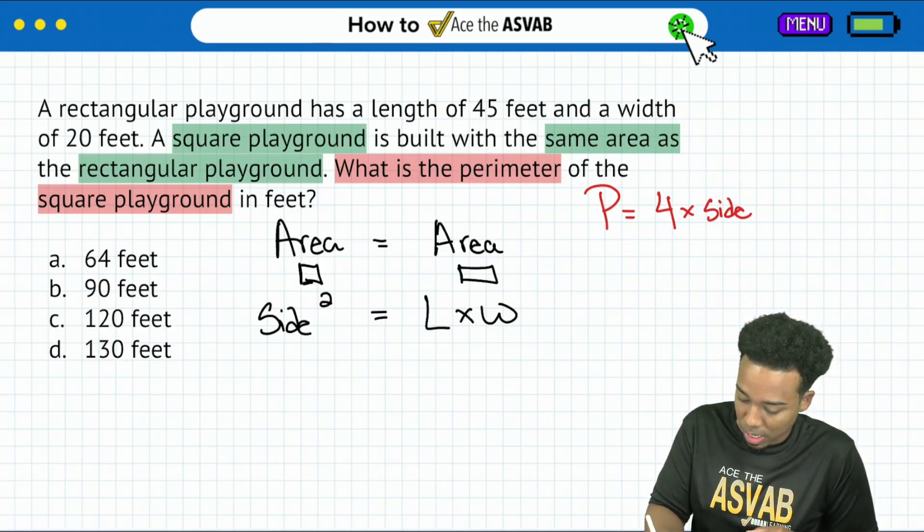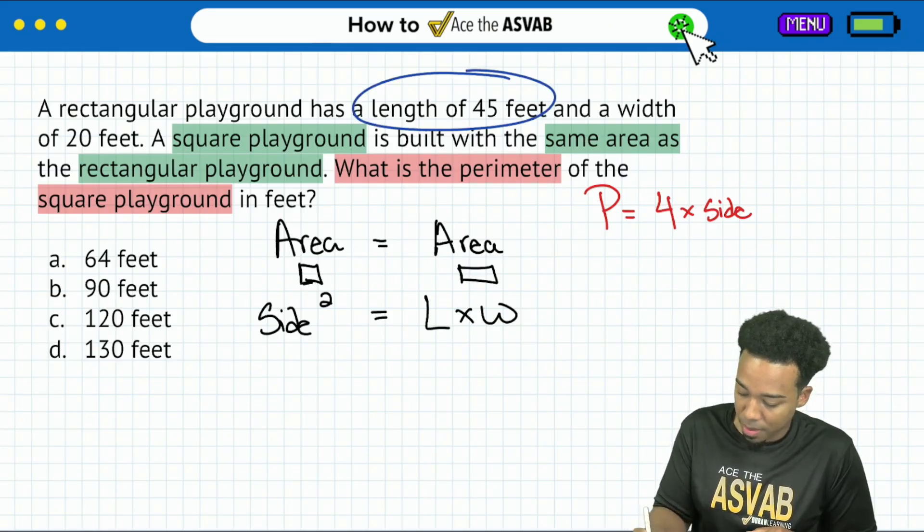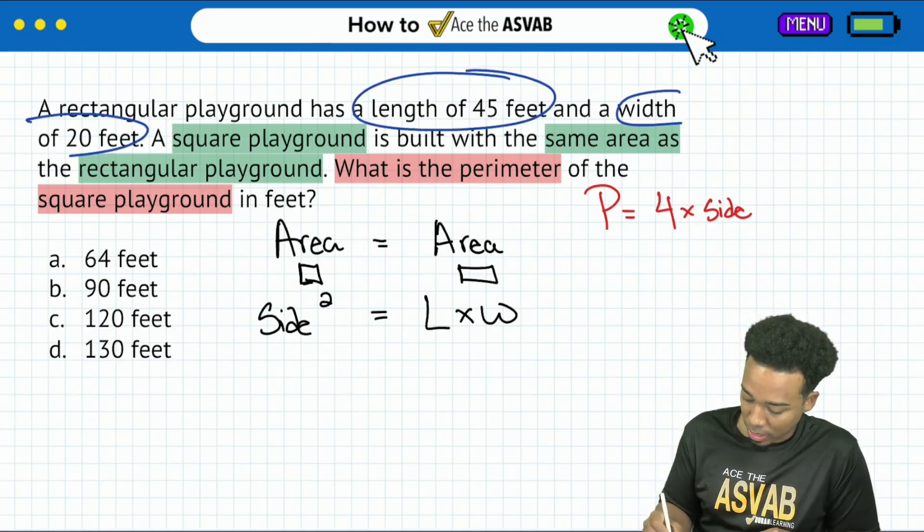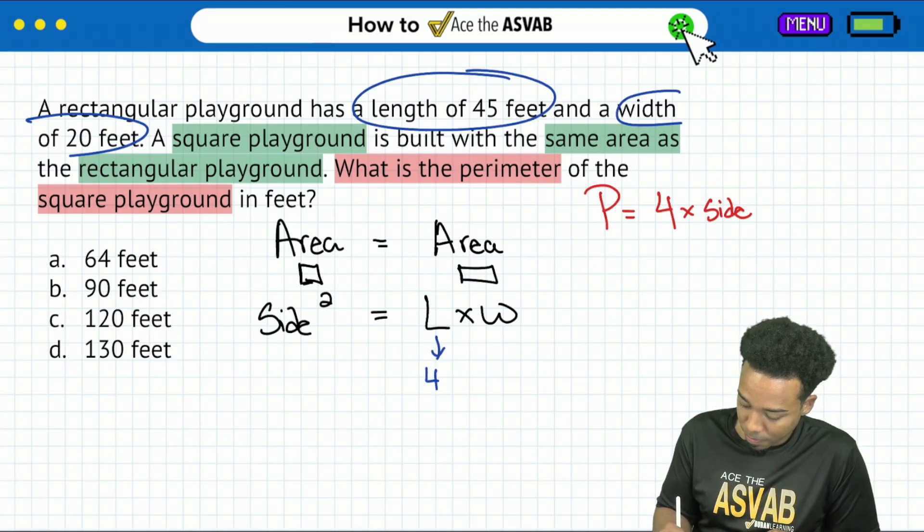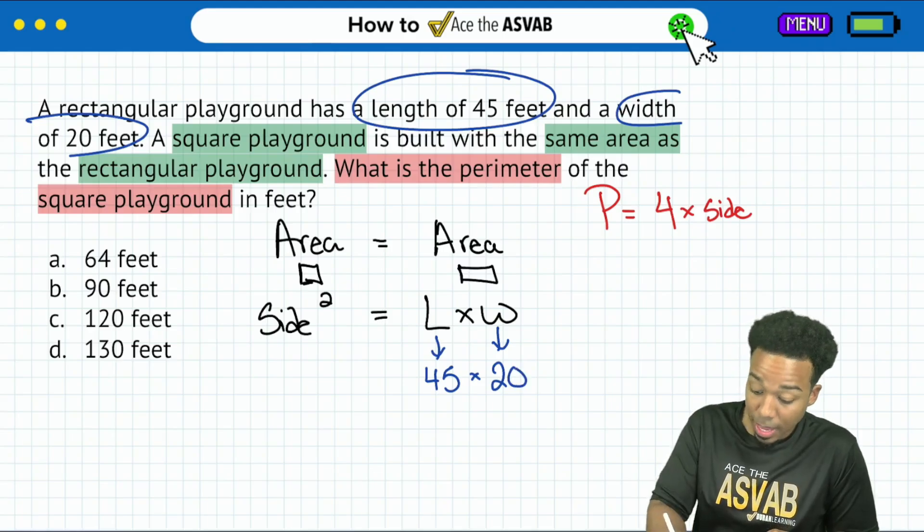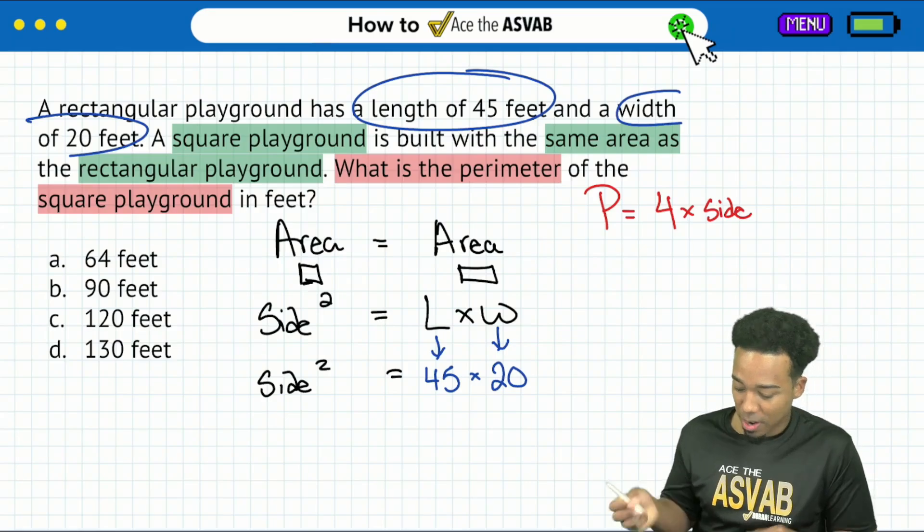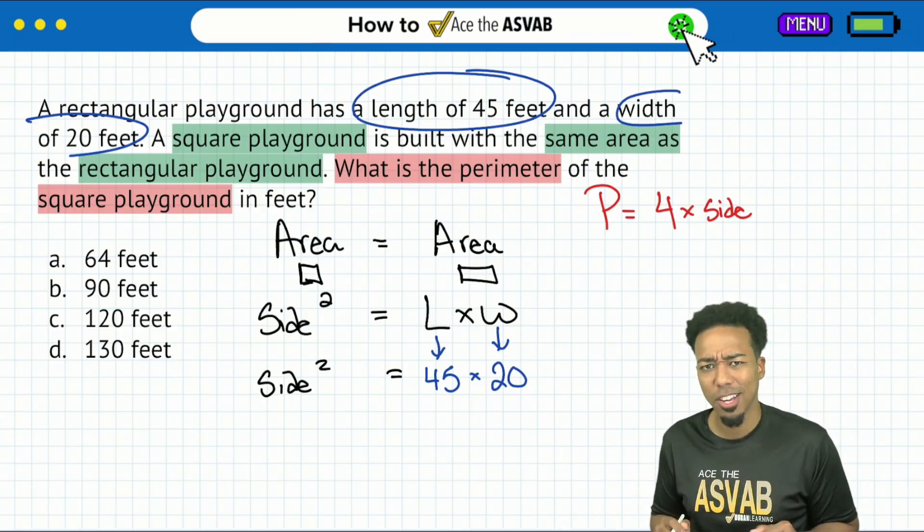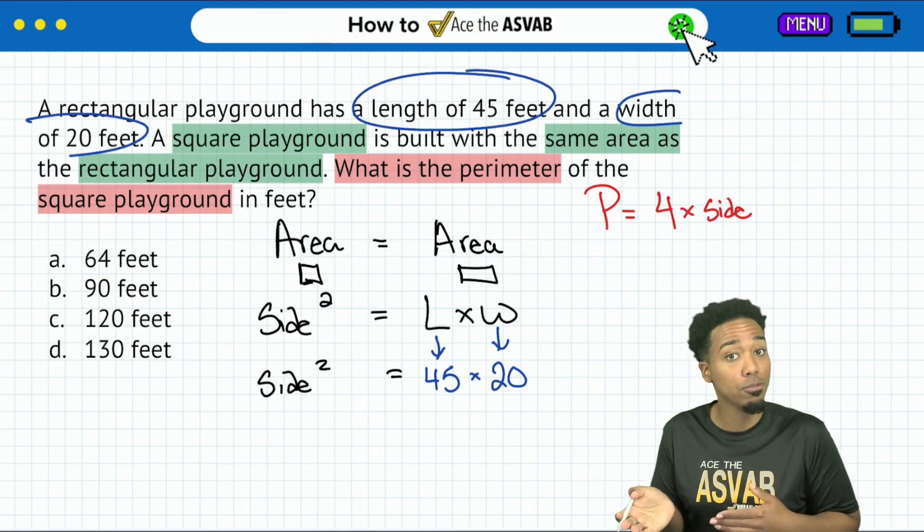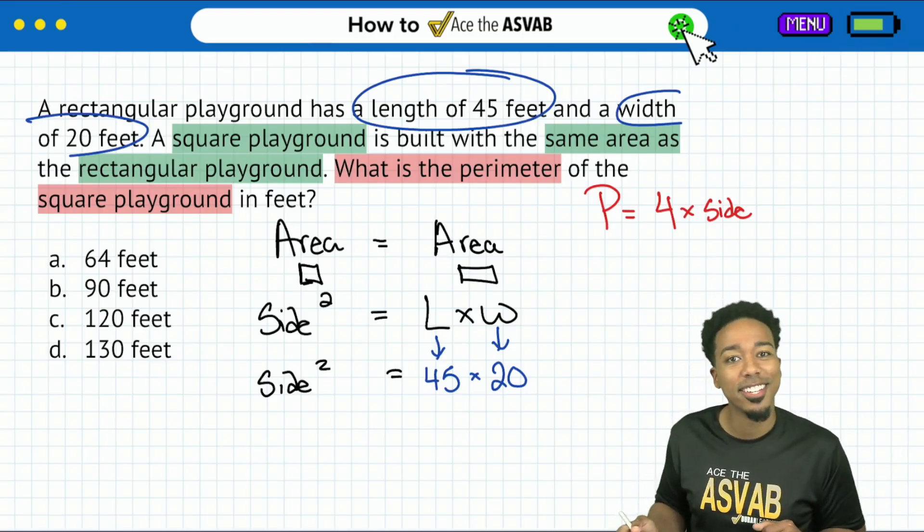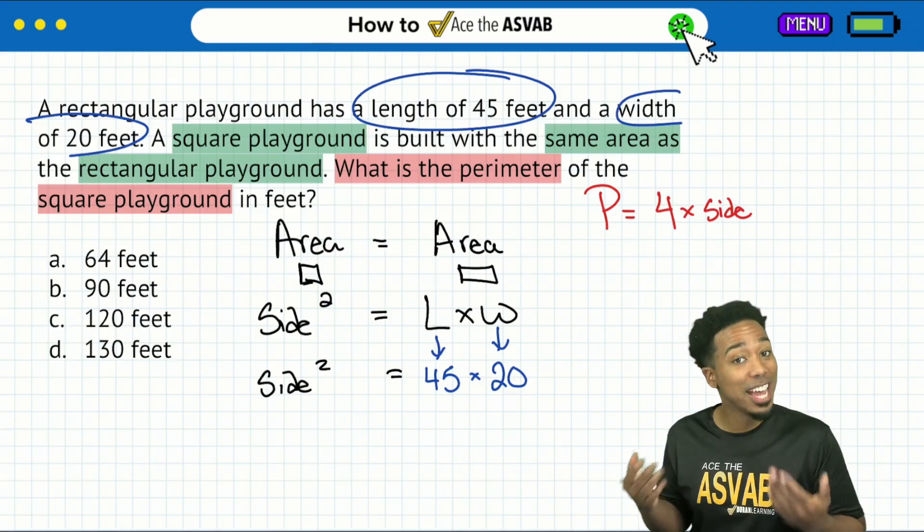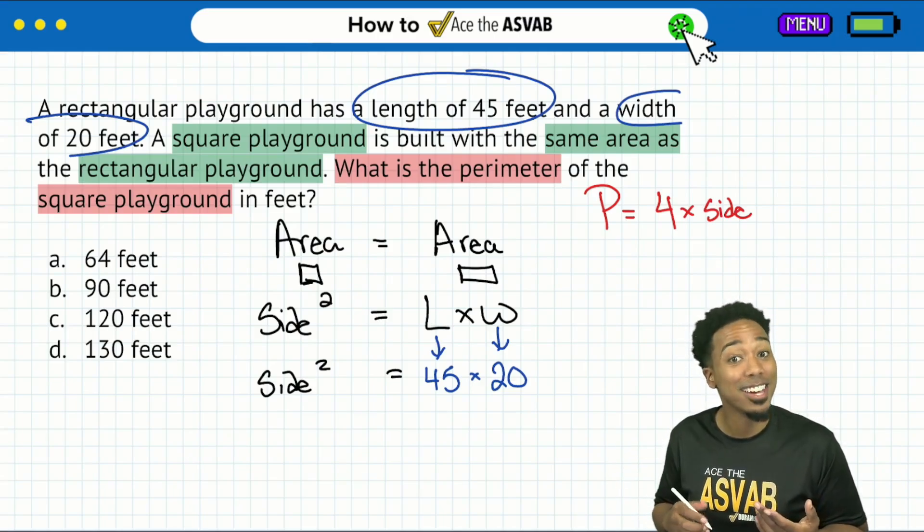So boom, if I write out the area formulas, the area of the square is going to be equal to the area of the rectangle. Why is that important? Because remember, we're trying to find the perimeter of the square. And to do that, the formula says we need the side length. Because I wasn't explicitly given the side length, I got to do a little bit of work to figure that out. So the area of a square is going to be side times side. And on the other side over here for the area of the rectangle, that's length times width.